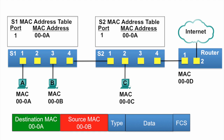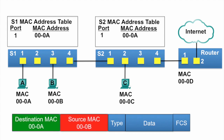Now let's have PCB send a frame back to PCA. The source MAC address of the frame is 000B and the destination MAC address is 000A. PCB sends it to switch S1.